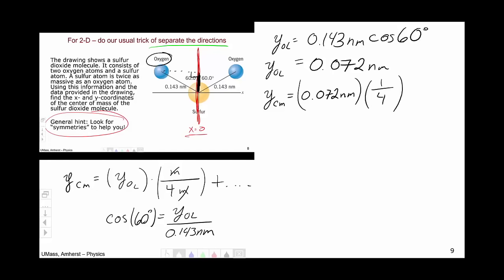Then I will move on to my sulfur atom. The sulfur atom has a y position of 0 because it's located at the origin and a weight of 2m over 4m. So again, the m's cancel.